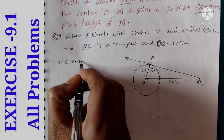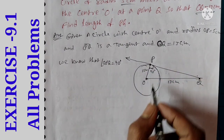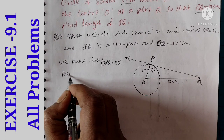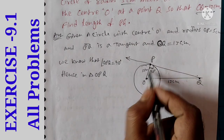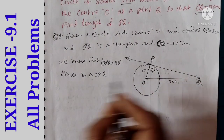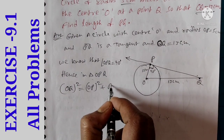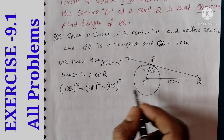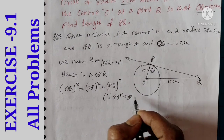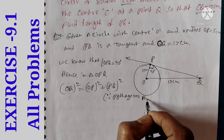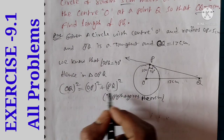Angle OPQ is equal to 90 degrees. Hence, in triangle OPQ, OPQ is the right angle triangle. By the Pythagoras theorem: OQ squared is equal to OP squared plus PQ squared.